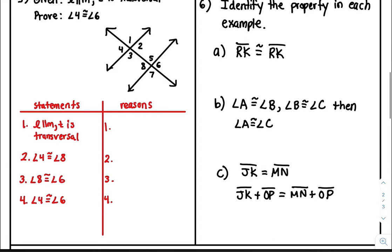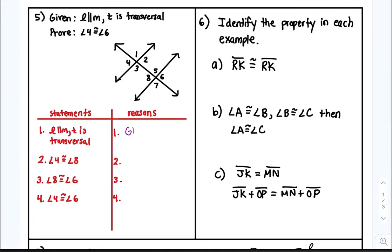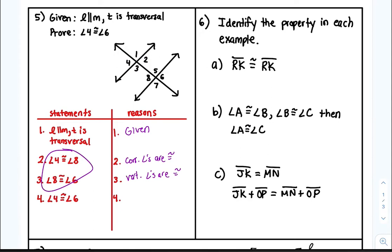Number five — given that line l is parallel to m and t is a transversal. How come angle 4 is congruent to angle 8? Because corresponding angles are congruent. How do we know angle 8 and angle 6 are congruent? They're across from each other — those are vertical angles. And angle 4 is congruent to angle 6 by the transitive property, using lines two and three.